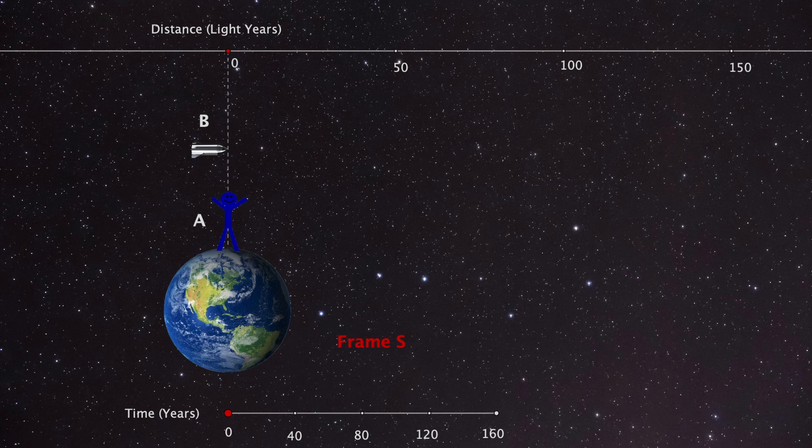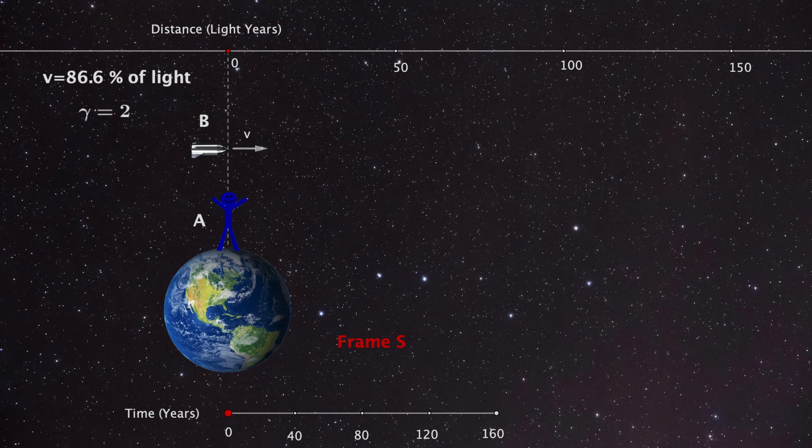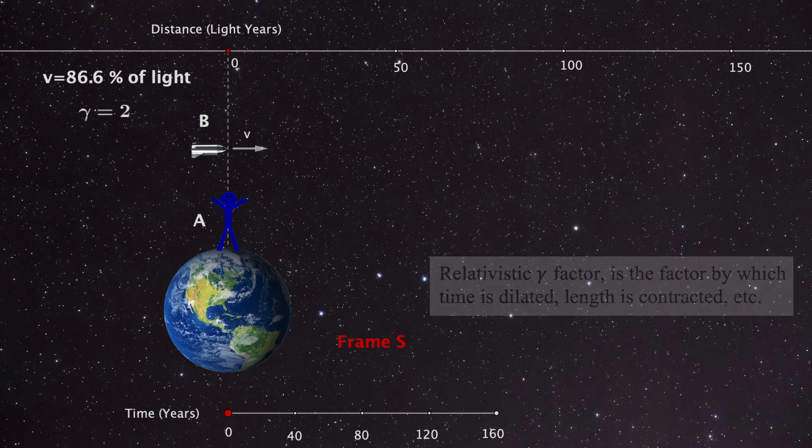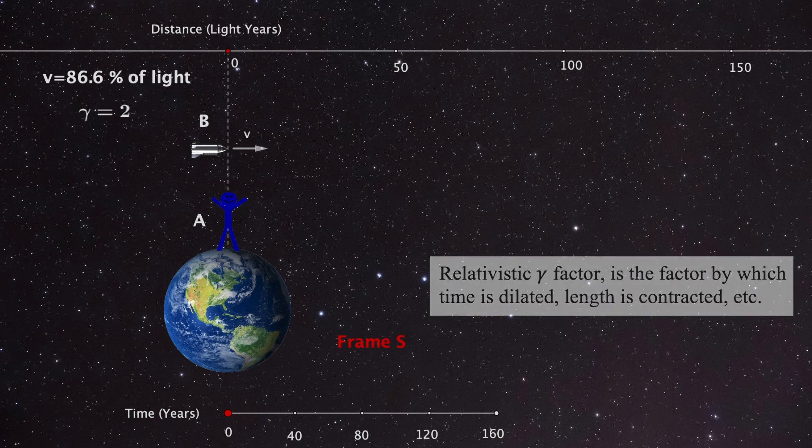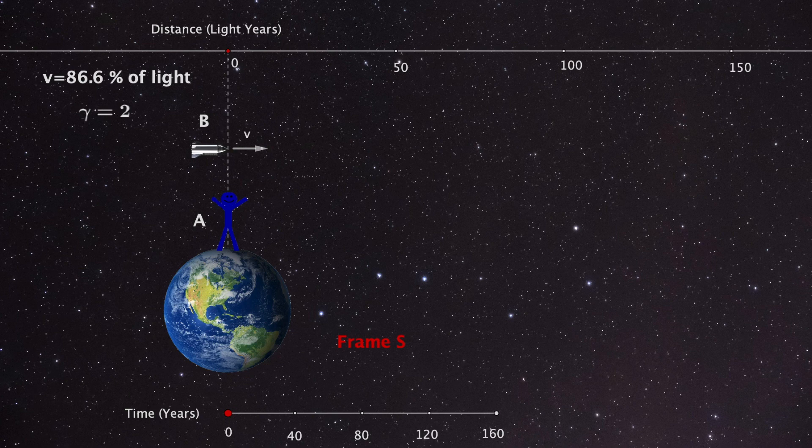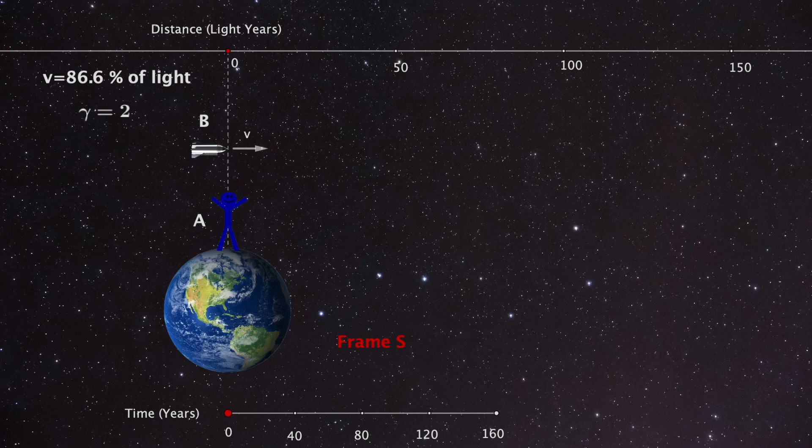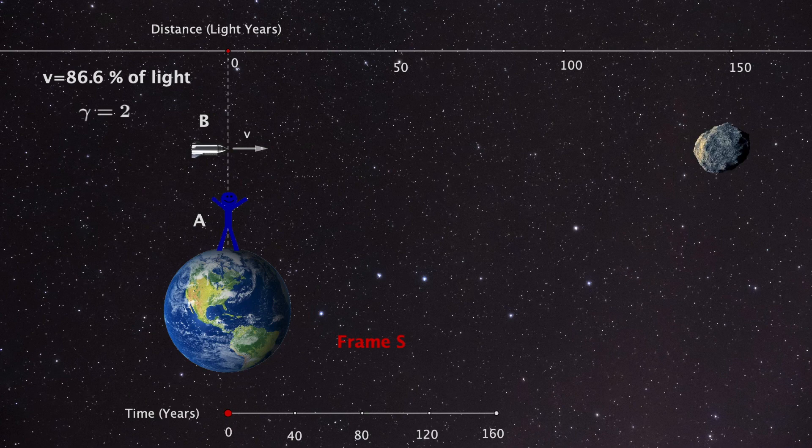We will set B's velocity to 86.6% of the speed of light, which will give us a gamma factor of 2. I will refer to this velocity as V. Now, to keep track of things, I will introduce a couple of events that will have to occur in exactly the same way in all possible reference frames. Observer B lives till he is 80 years old and the cause of his death is an unfortunate collision with an asteroid in deep space.